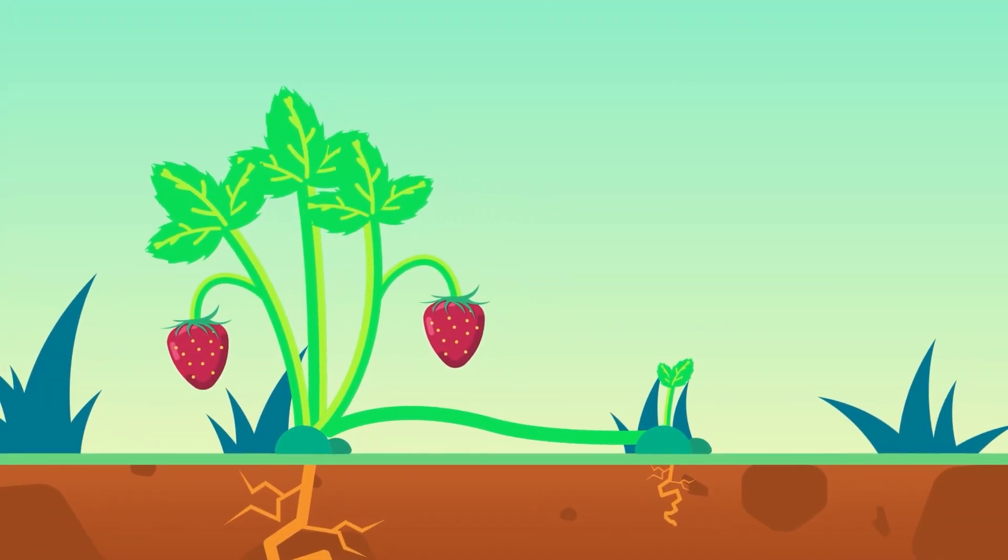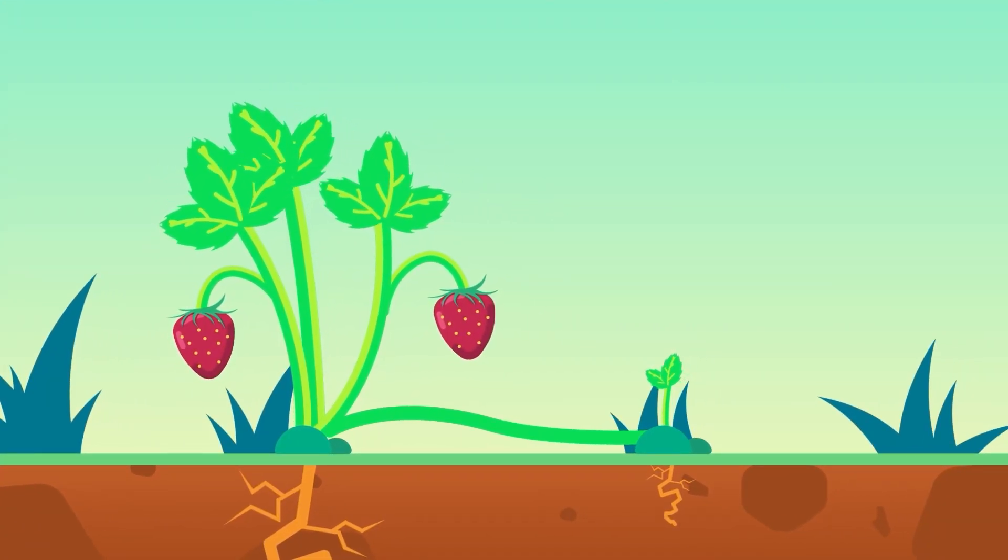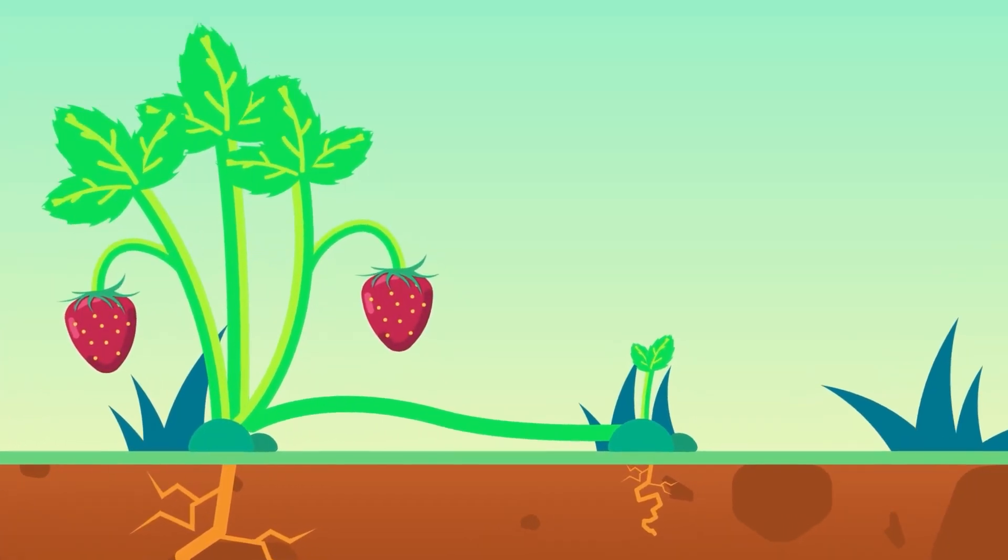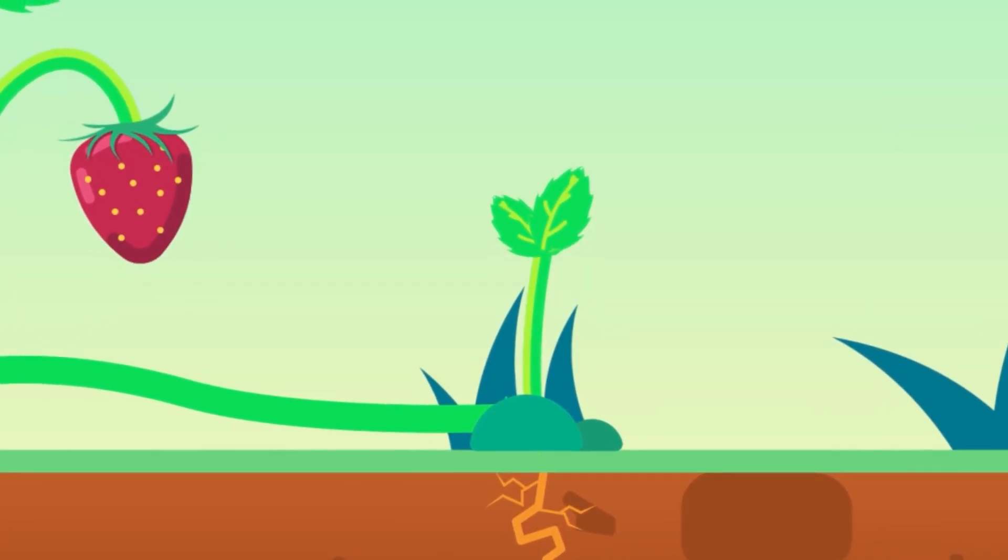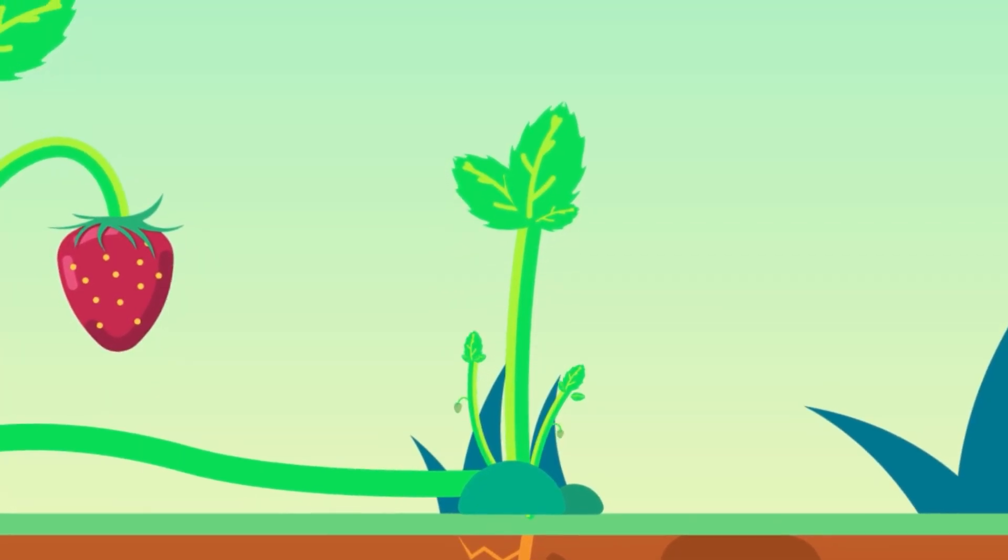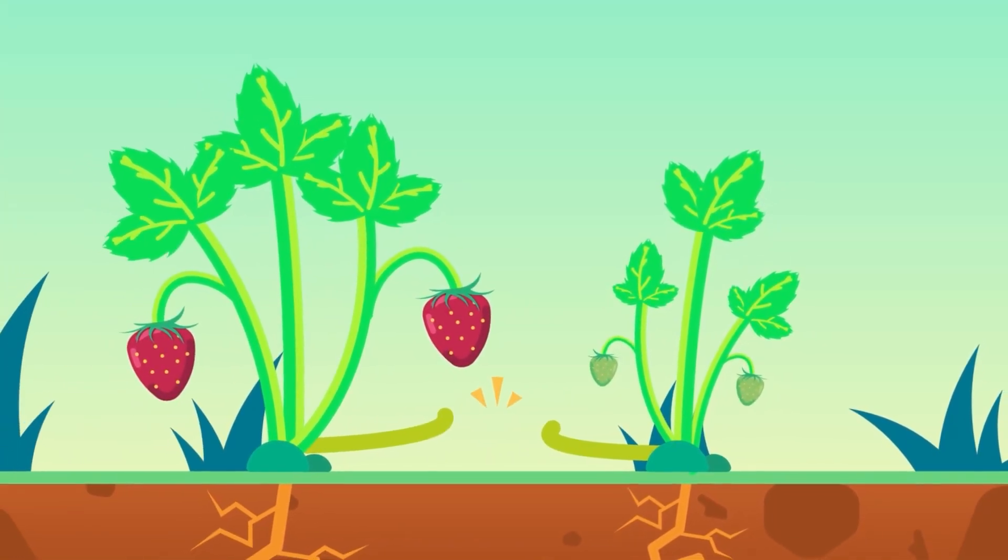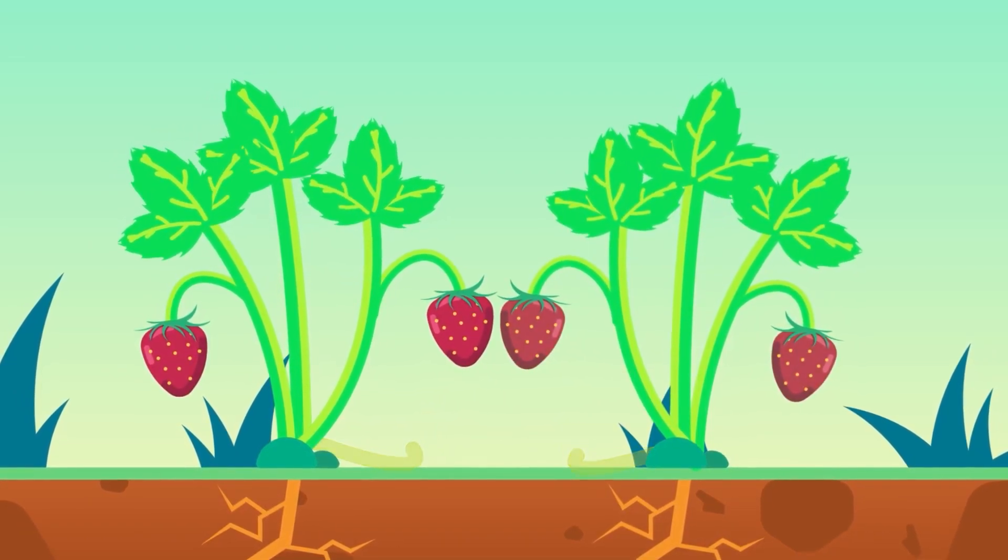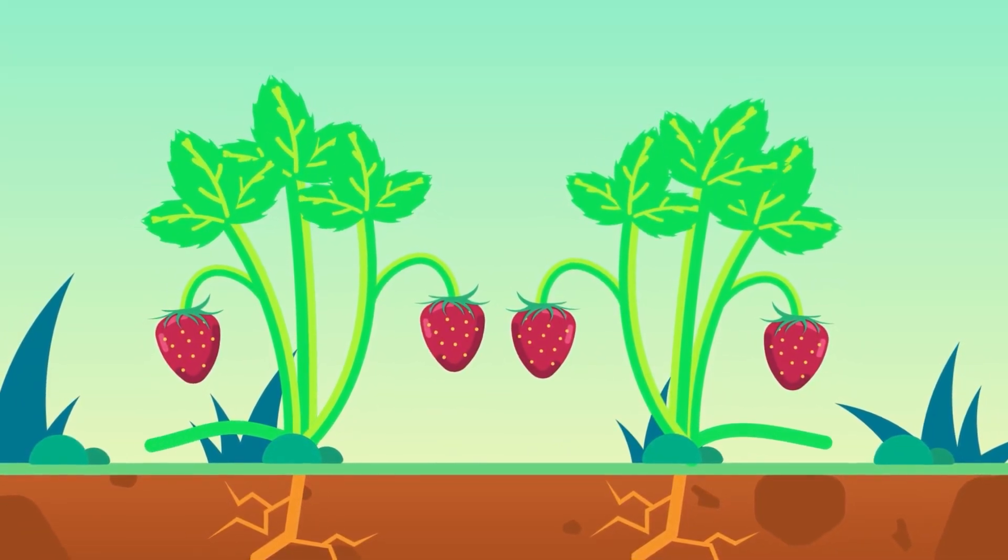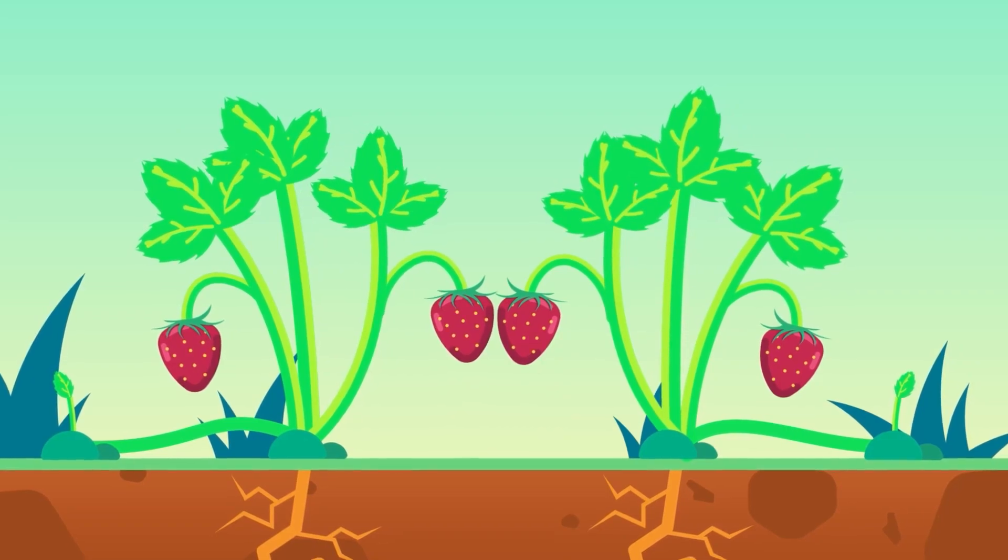Vegetative reproduction or propagation is a form of asexual reproduction found in plants. It usually involves the growth of a new part of a plant, usually a bud or a stem, which eventually becomes separated from the parent plant to form a new individual. In this way, several plants can be produced from a single parent plant.